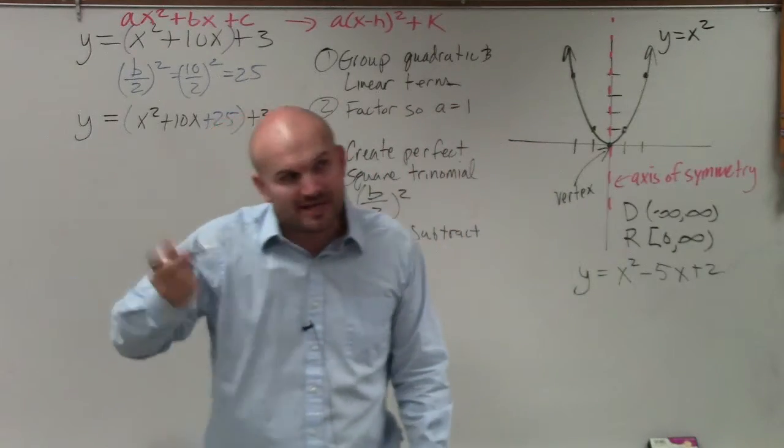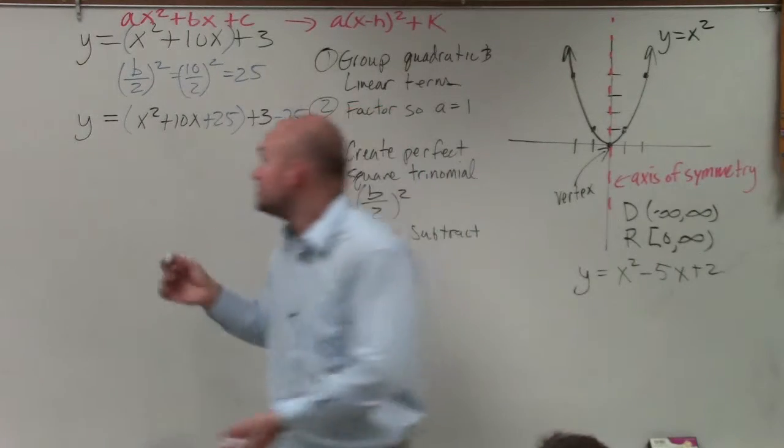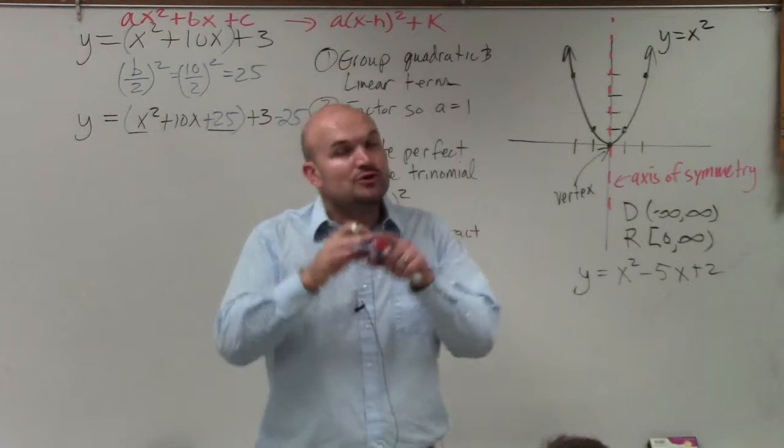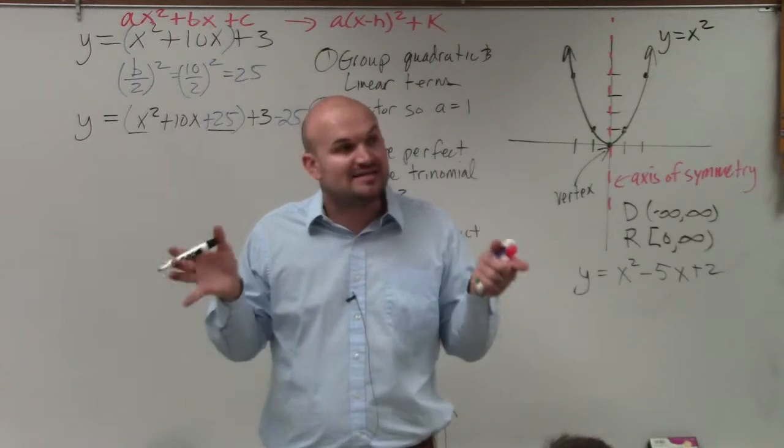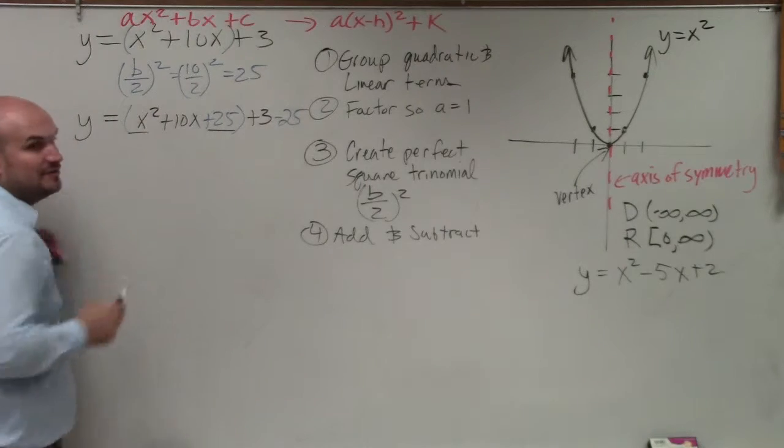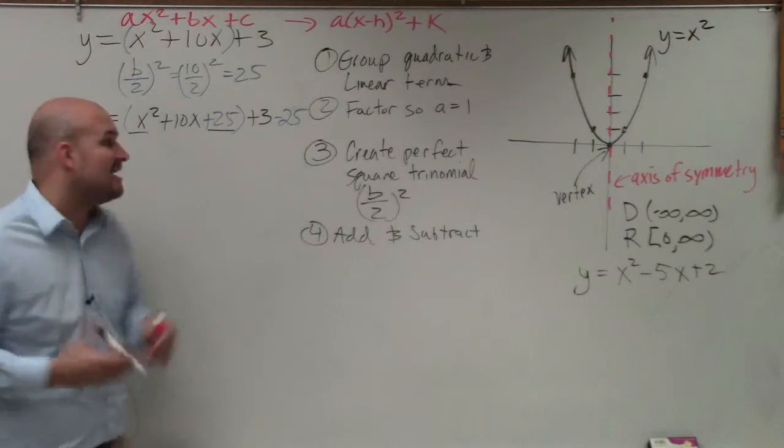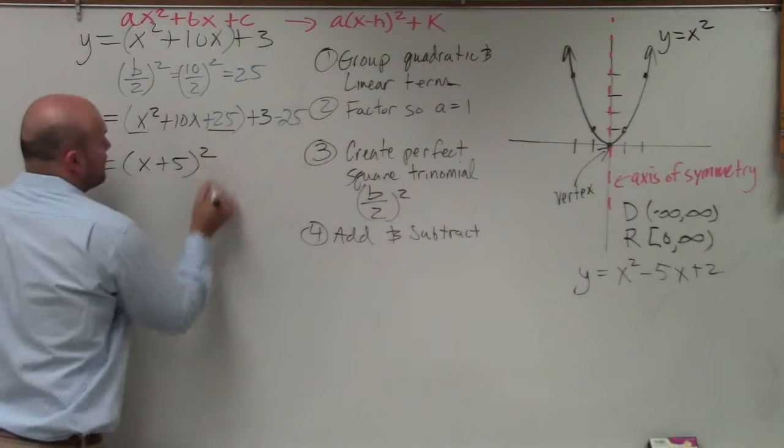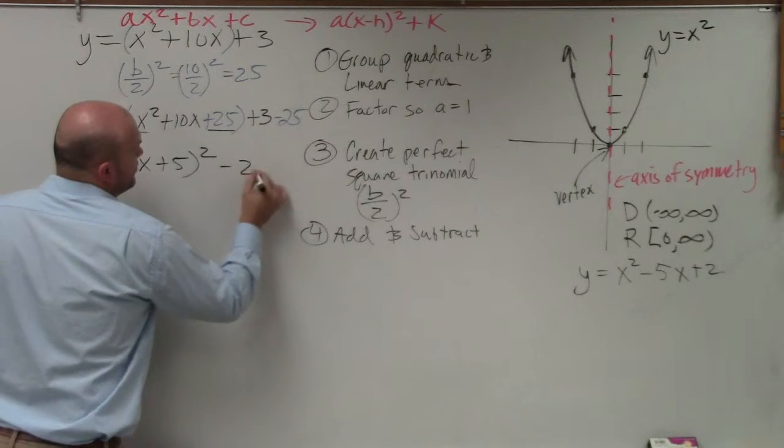Which if you guys remember, in our focus lesson, we talked about factoring perfect square trinomials. Whenever the first term and the last term are square numbers, you can factor that where the factors would be exactly the same. What two numbers multiply to give you a positive 25, add to give you a 10? 5. So it's x plus 5 times x plus 5, or y equals x plus 5 squared minus 22.